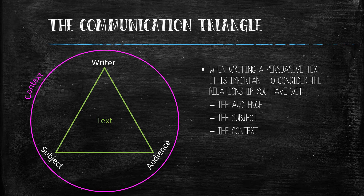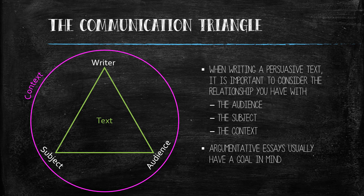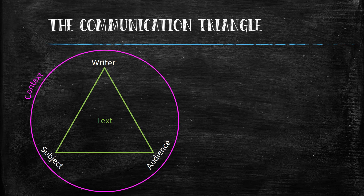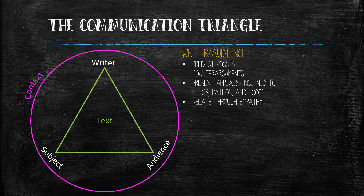The reason these relationships are important is that when we write an argumentative paper, we don't typically just write it for fun. Usually there is some kind of goal in mind, like convincing a mayor to consider repairing a pothole, persuading your boss to give you a raise, or preventing a tree from getting cut down. As we have discussed in previous lessons, it is crucial to know your audience in order to write an effective persuasive piece so that you can predict possible counterarguments, present appeals inclined to ethos, pathos, and logos, and be able to relate to the reader through empathy.